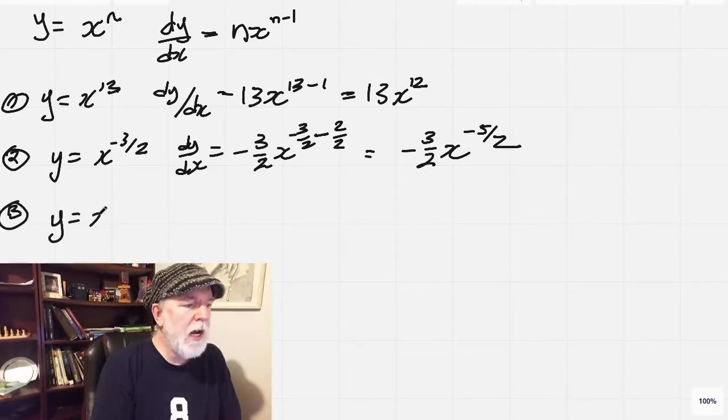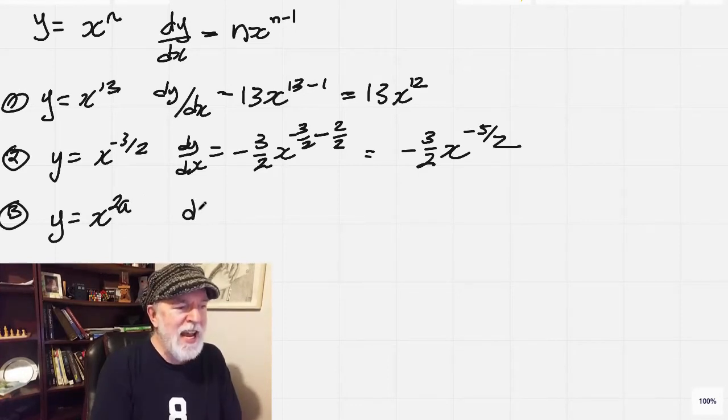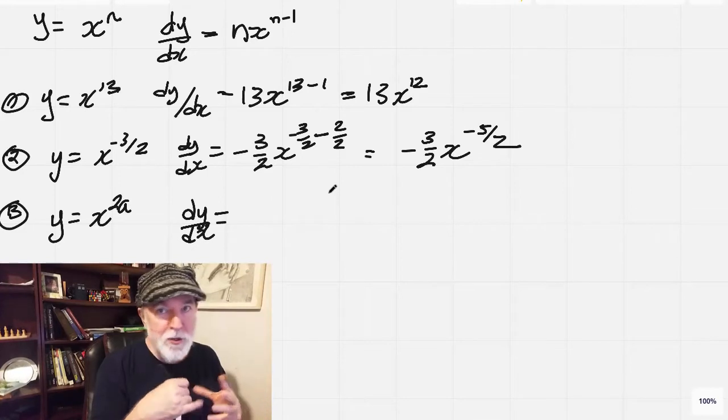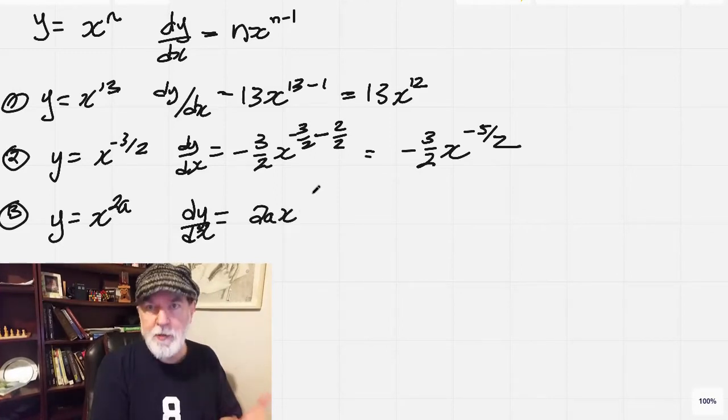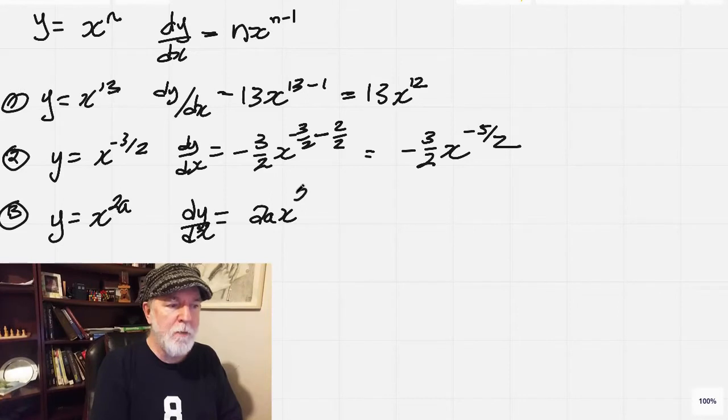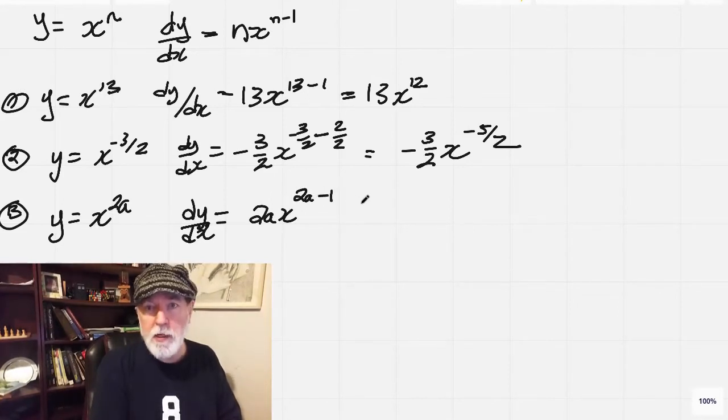y equals x to the power of 2a. Now we've got an expression up here that's not just an integer or a rational number. It's 2a. So same as before, we bring the 2a out to the front. There's our x, and we subtract 1 from what's up here. Now, do we know what this 2a minus 1 is? Well, no.